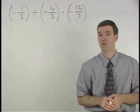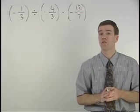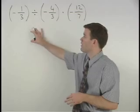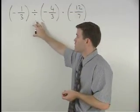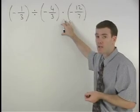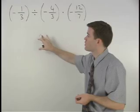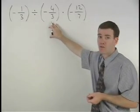According to our order of operations, multiplication and division are to be done in order of appearance as we read the problem from left to right. So in this problem, since the division appears before the multiplication, we must first divide negative one-third by negative four-thirds.